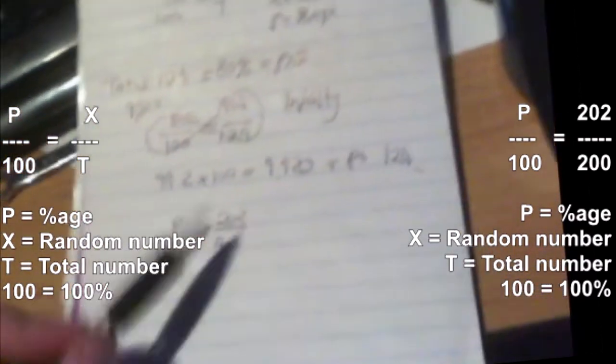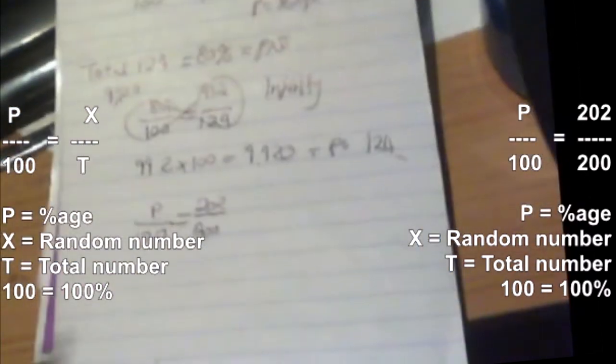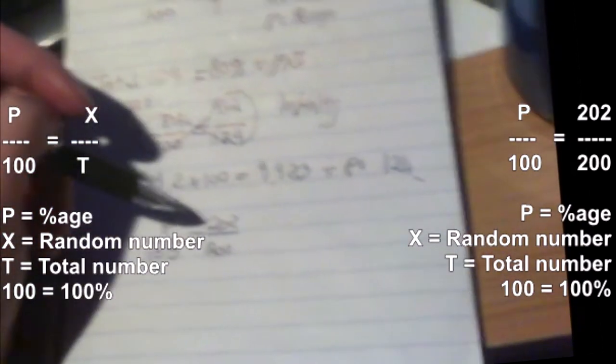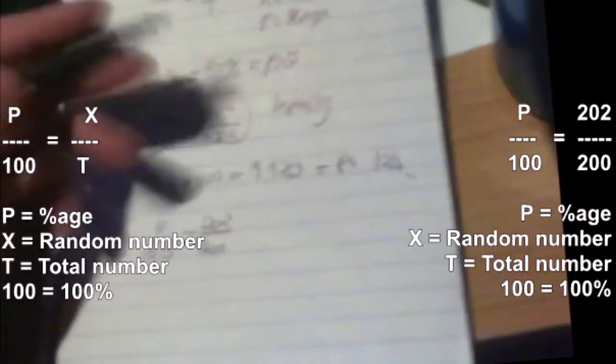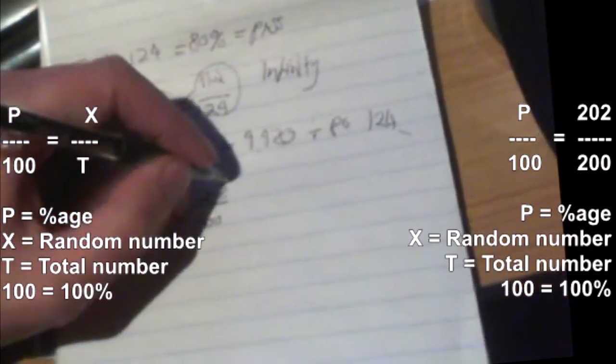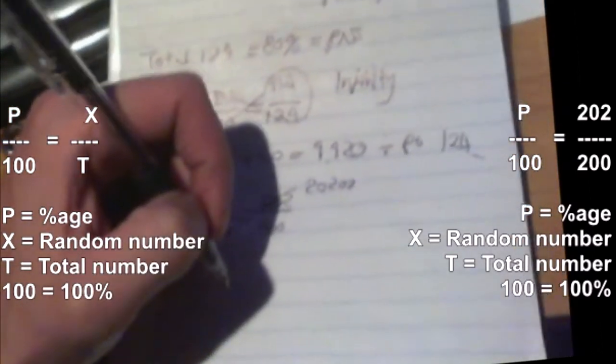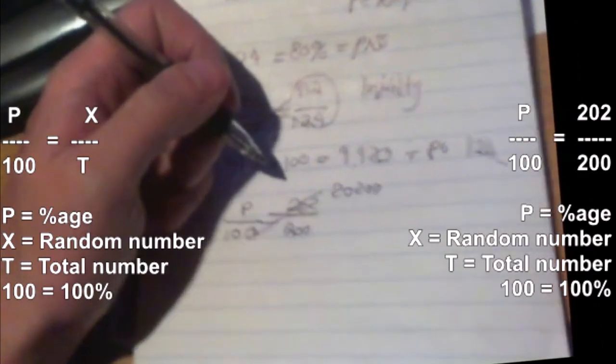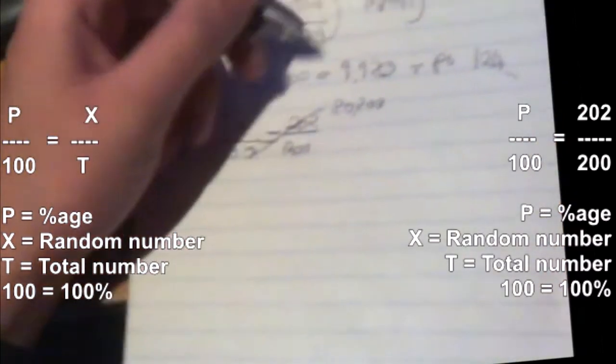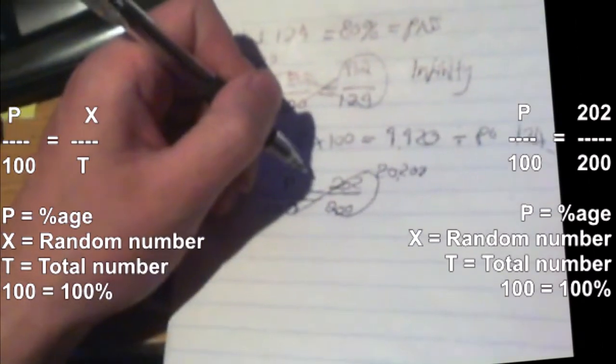So how do we find P? We can't do P times 200 or 200 times P. You probably could do the algebra way—it'd be 200P—and then divide it out. But nah. We'll go this way just to make it simple: 100 times 202. You just add two zeros: 20,200. I'm going to double-check that. Yep, 20,200. Then we divide that by 200.